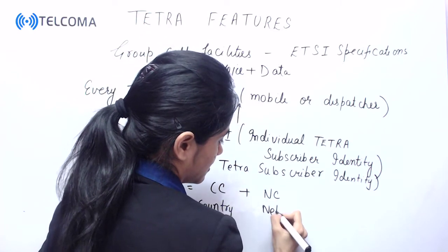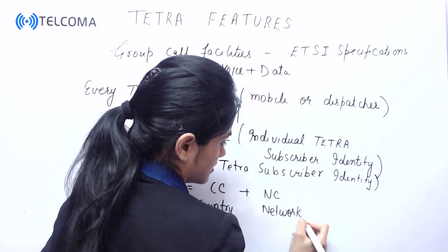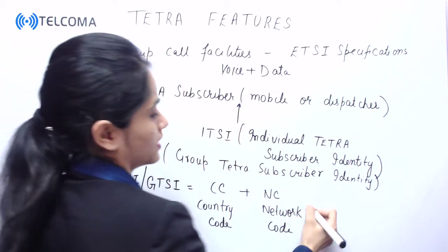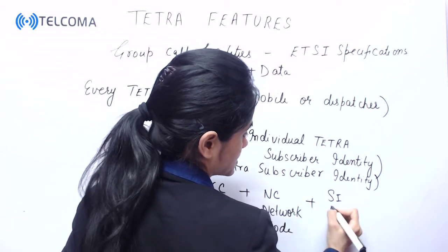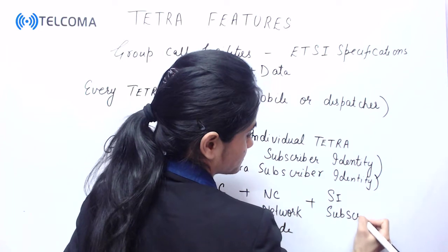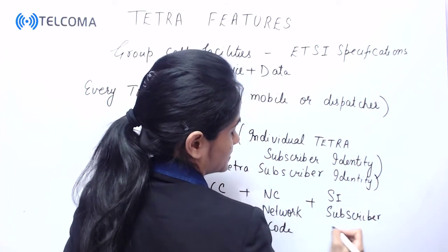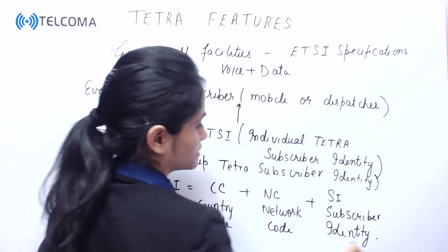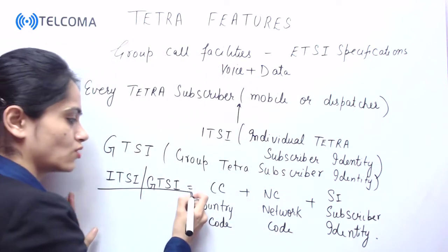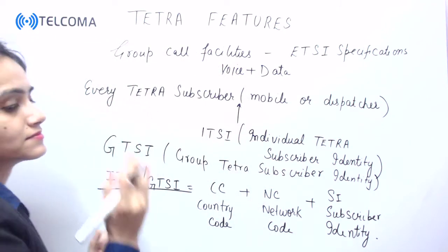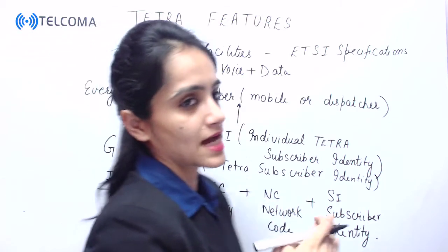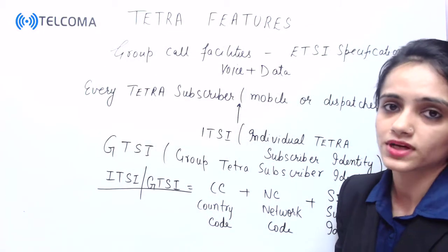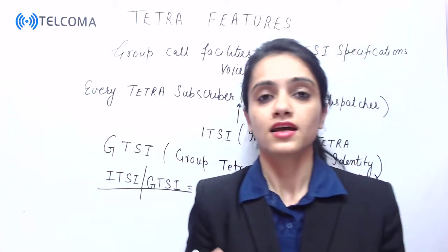The composition continues with NC, which stands for Network Code, and then SI, which stands for Subscriber Identity. So the composition of ITSI or GTSI is defined by Country Code, Network Code, and Subscriber Identity.